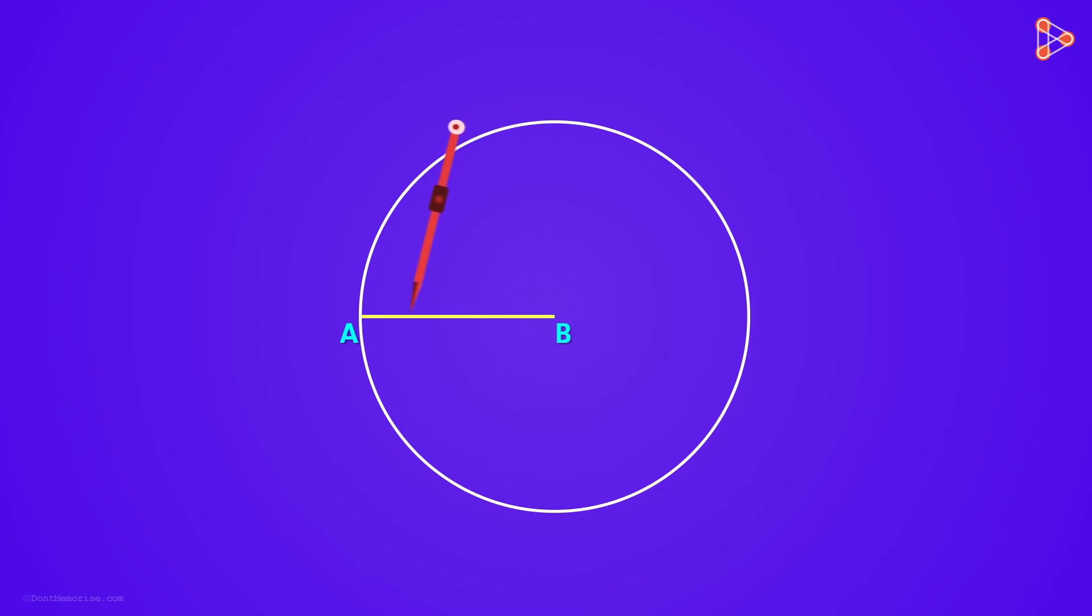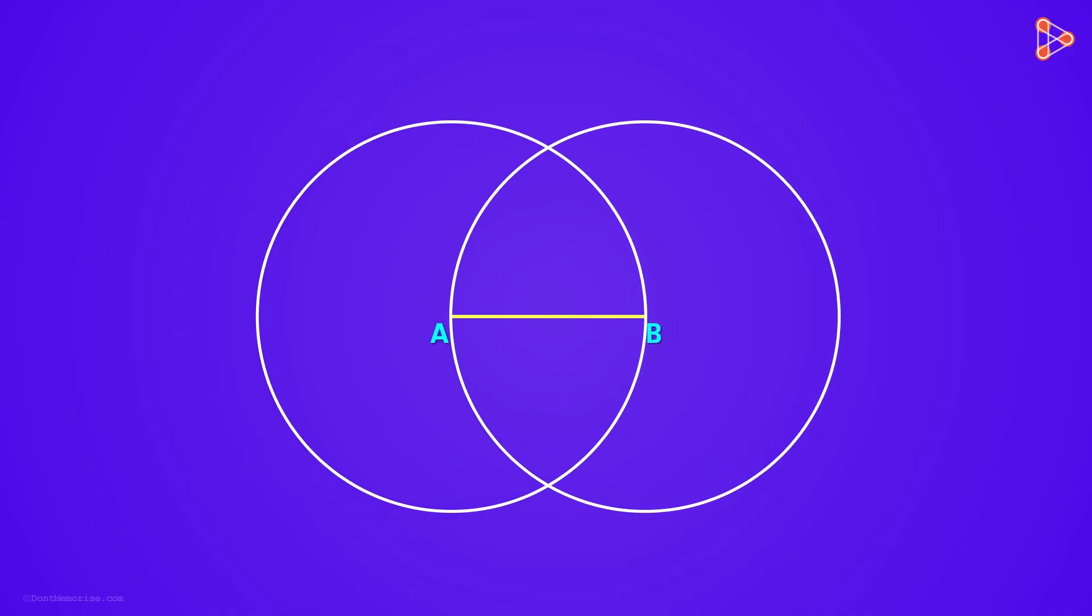Similarly, without changing the length of the compass, repeat the process by placing its fixed point on point A. Now we see that we have two circles with centres A and B, and both these circles intersect at these two points.